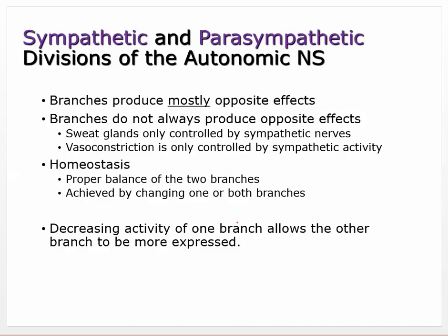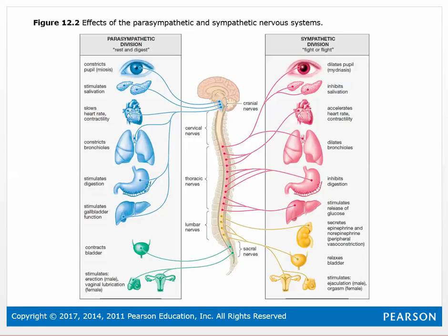Homeostasis is a proper balance of the two branches achieved by changing one or both branches. Decreased activity of one branch allows the other branch to be more expressed. The parasympathetic is mainly craniosacral — it's activated up here and down here, and it activates lots of organs. We worried about that when we were talking about spinal cord injuries.